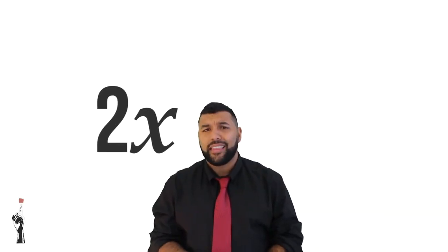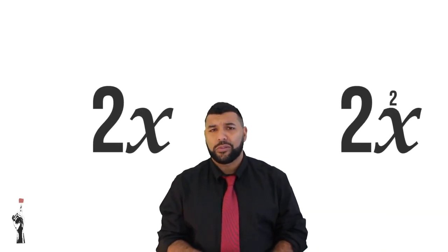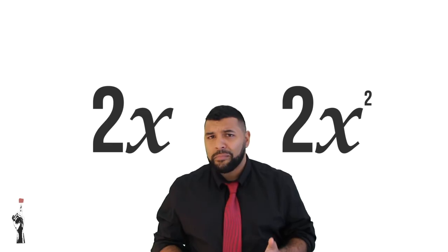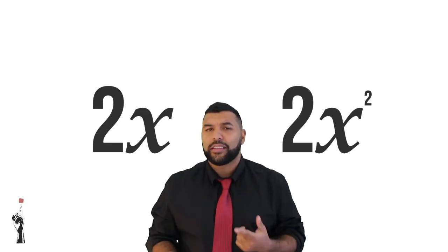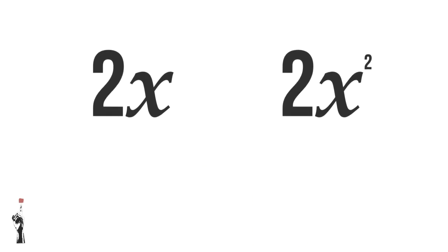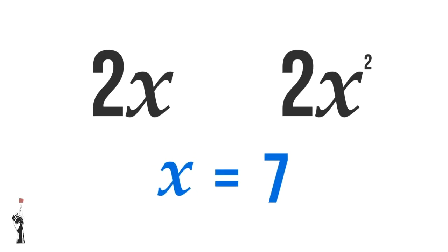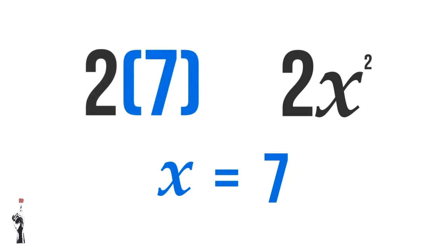Let's take a look at two of these: 2X, and the other is 2X squared. Even though these look the same, they're not quite the same. If we said X was equal to 7, what would we get? Well, if we look on the left hand side of the equation, we'd have 2 multiplied by 7.